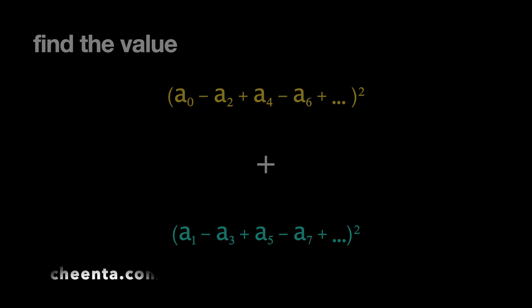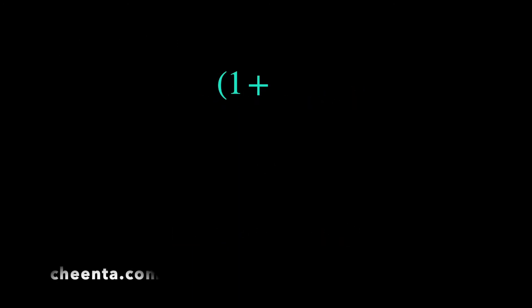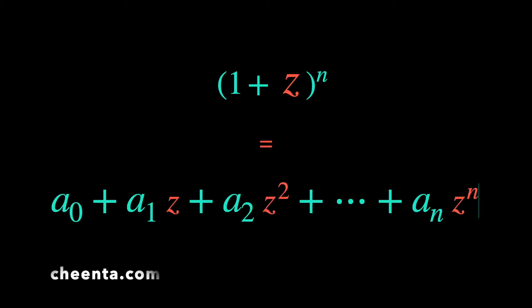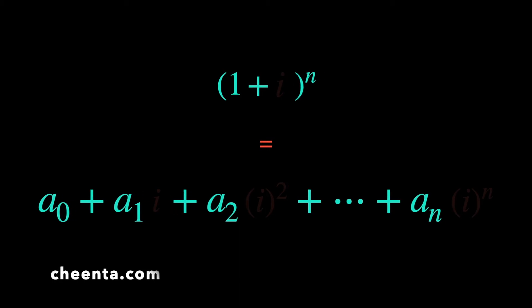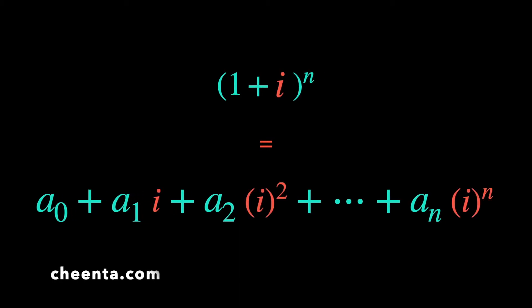How do we go about it? Let's go back to the expression supplied to us: (1 + z)ⁿ = a₀ + a₁z + a₂z² + … We will replace every z by the imaginary number i — this is a trick that will help us greatly to solve this problem, as we will see in a moment. Here i = √(−1).